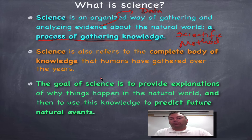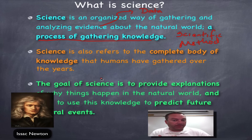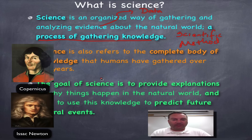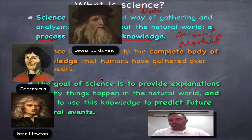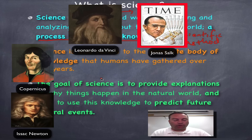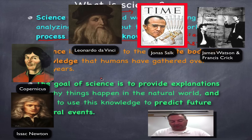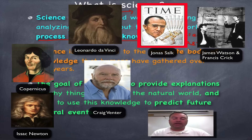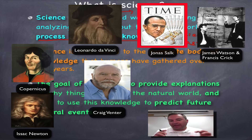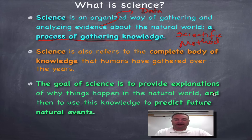Science is also the complete body of knowledge that we've collected throughout the history of mankind. Think of Sir Isaac Newton discovering gravity, the astronomer Copernicus, Leonardo da Vinci, more modern scientists like Jonas Salk, Watson and Crick, and even up to current figures like Craig Venter and the human genome project. All the data and knowledge collected by scientists throughout human history — that too is science.